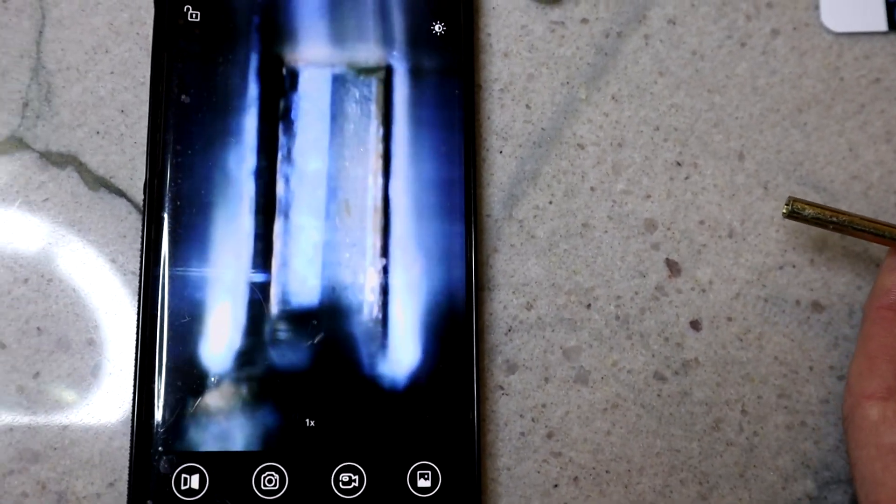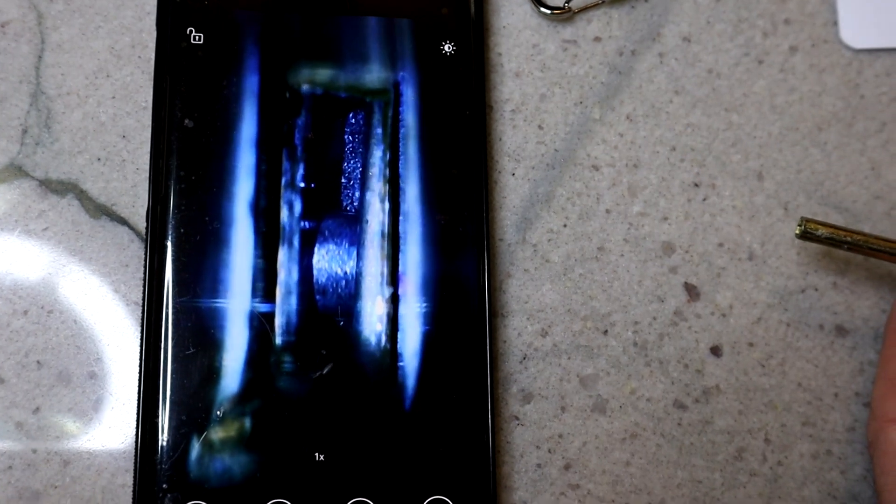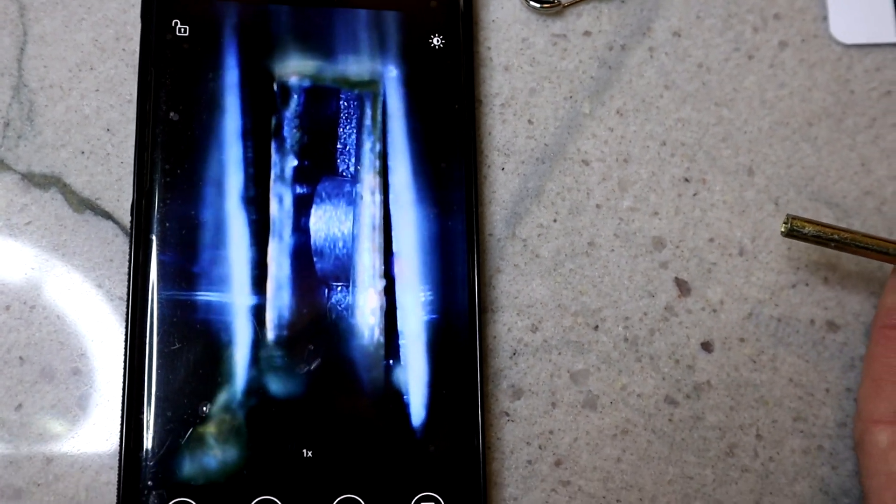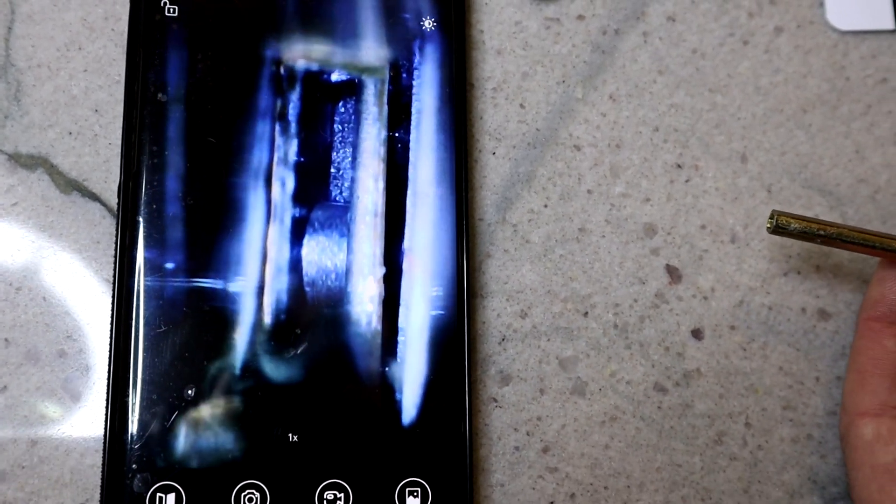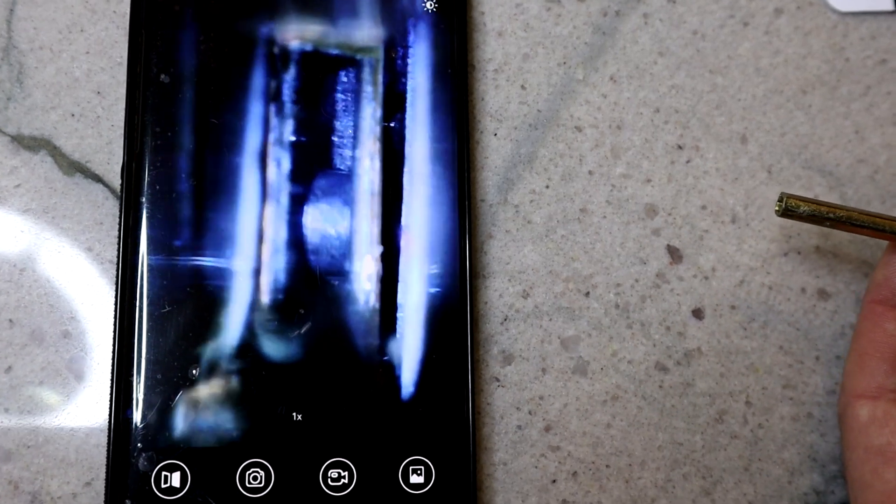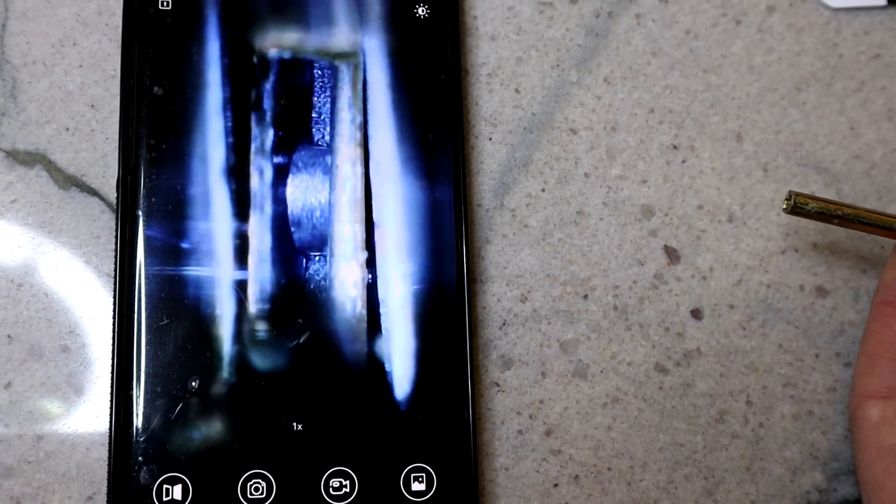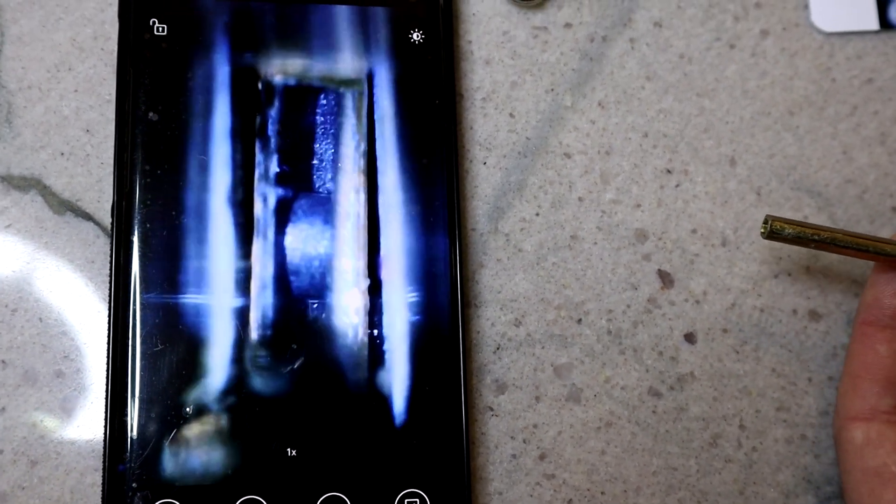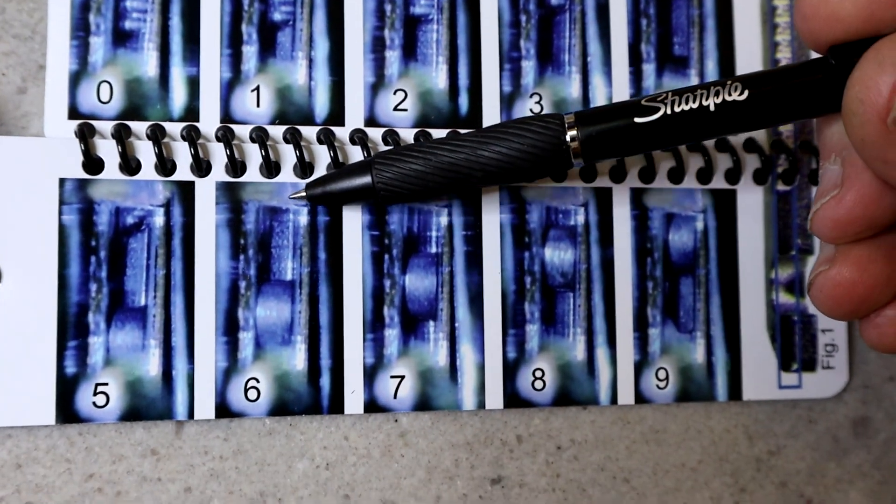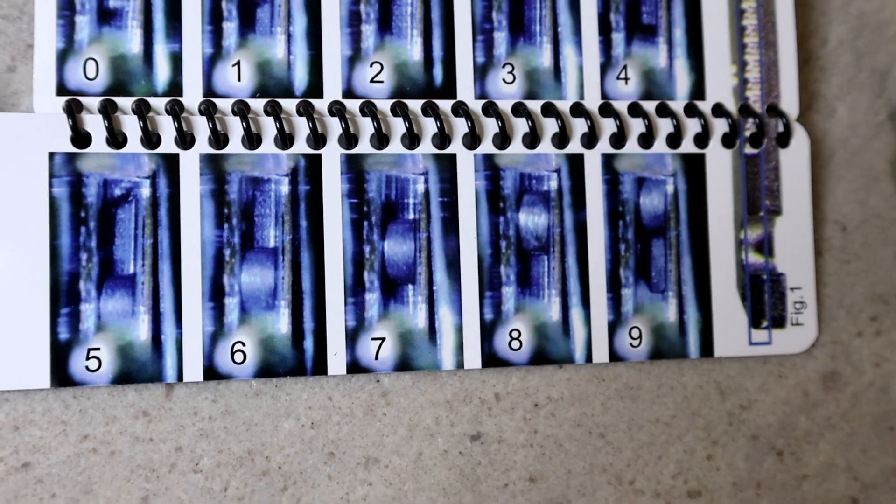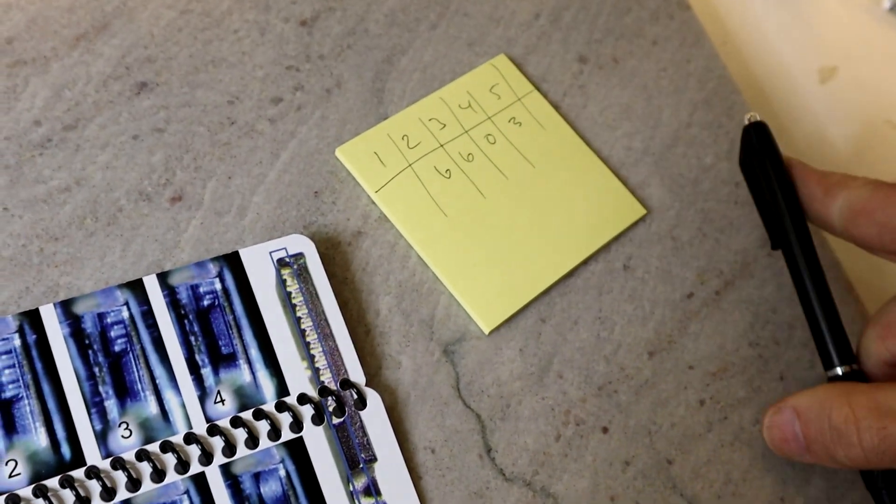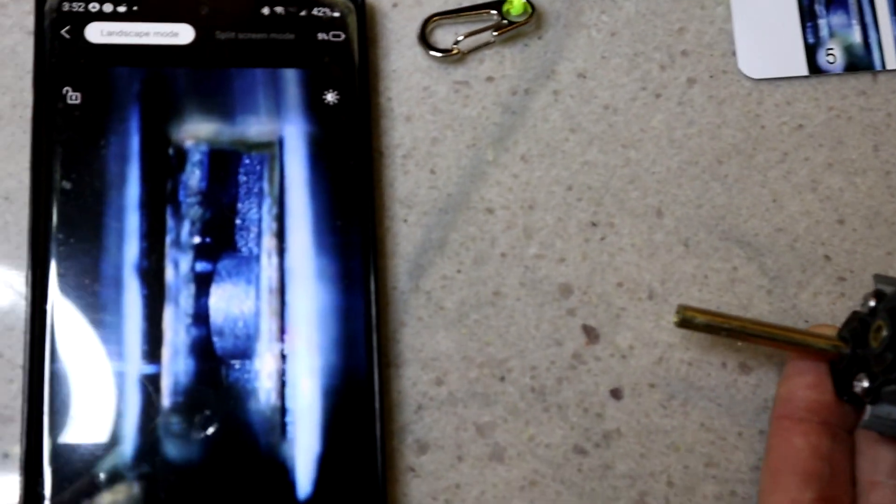Moving on to the next position. Same thing. I have to rotate it to get a notch to show right in the center. There's no notch showing. I'm going to write down a six again.